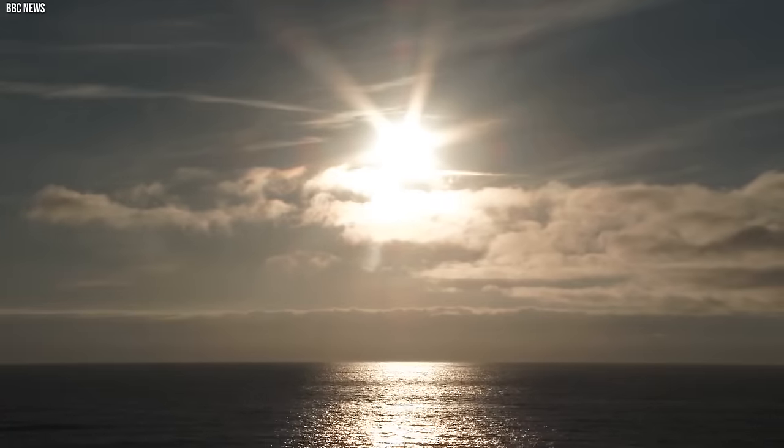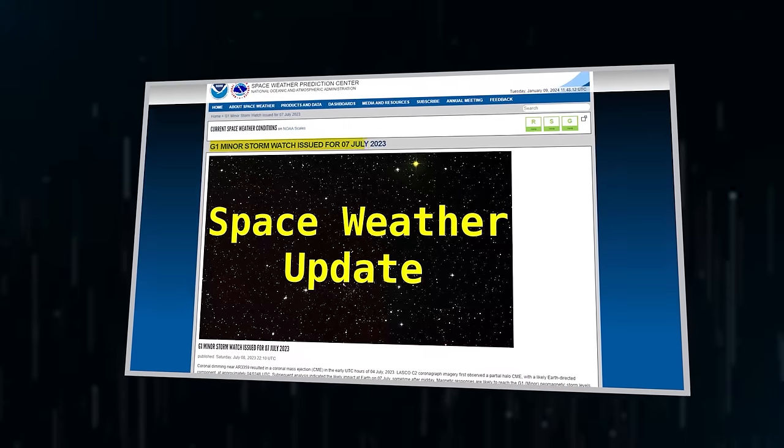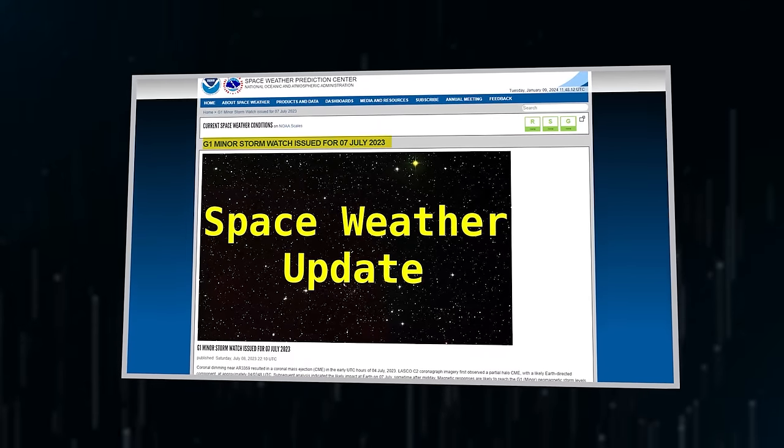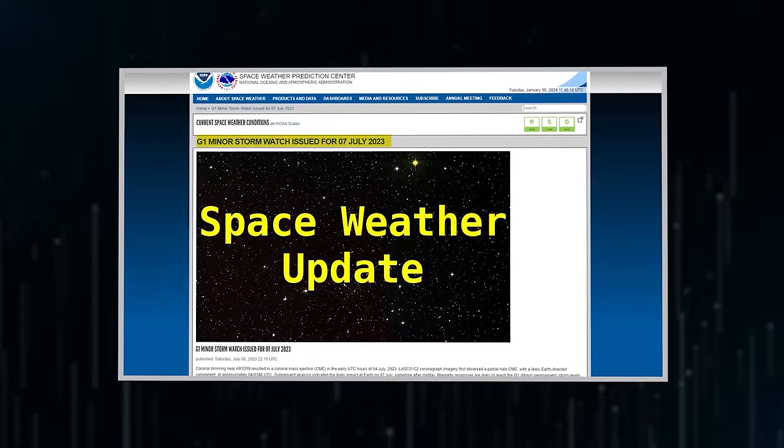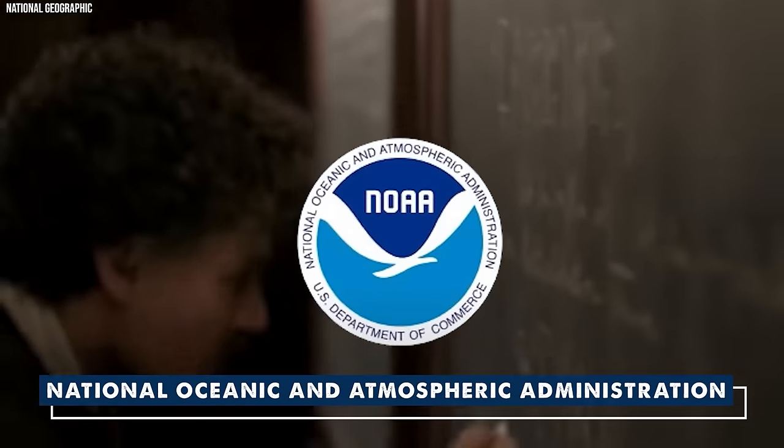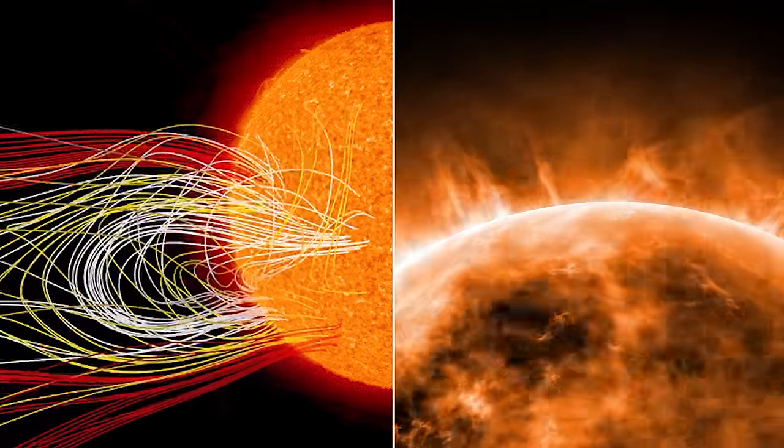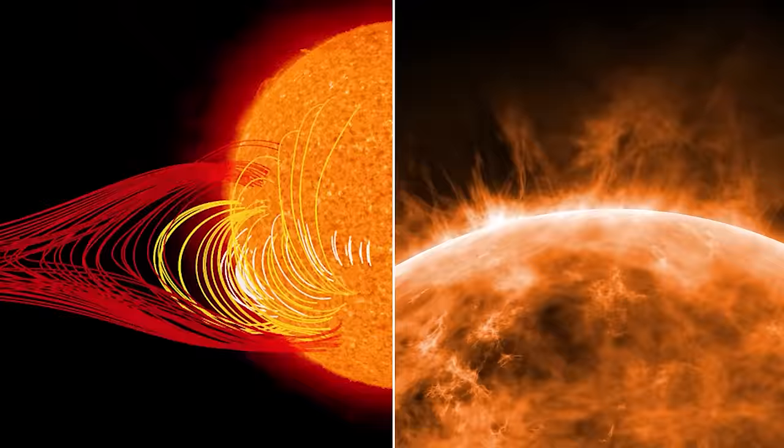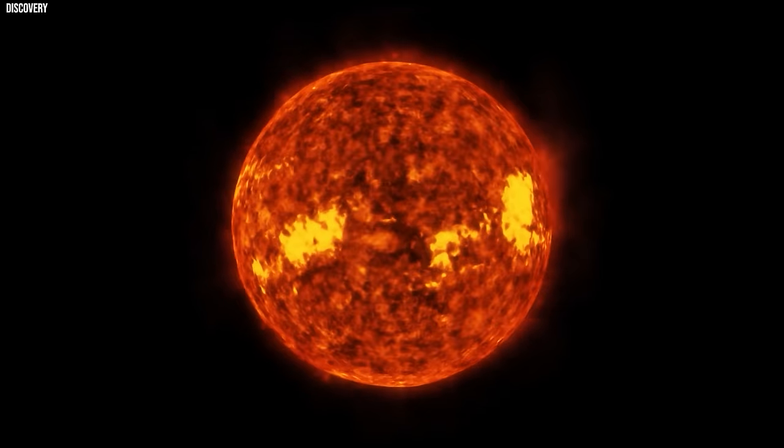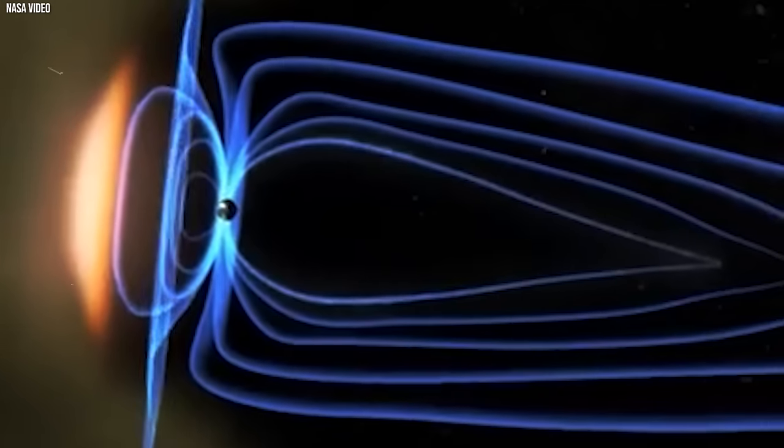One such event, occurring on July 7th, led to a prolonged G1 geomagnetic storm, as indicated by experts from the National Oceanic and Atmospheric Administration. During this particular event, a coronal mass ejection was embedded within the solar wind preceding the co-rotating interaction region, contributing to the impact on Earth's magnetic field.